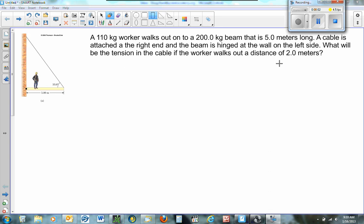A 110 kg worker walks out onto a 200 kg beam that's 5 meters long. A cable is attached at the right end and the beam is hinged at the wall on the left side. What will be the tension in the cable if the worker walks out a distance of 2 meters?